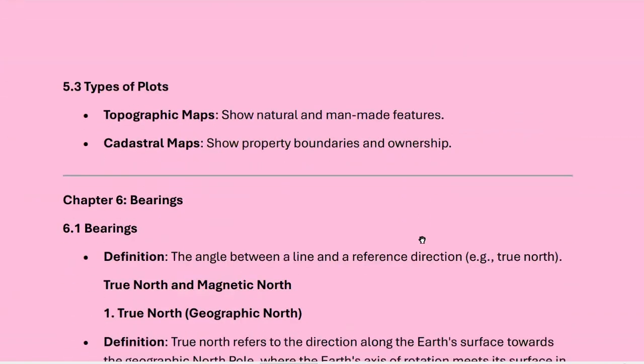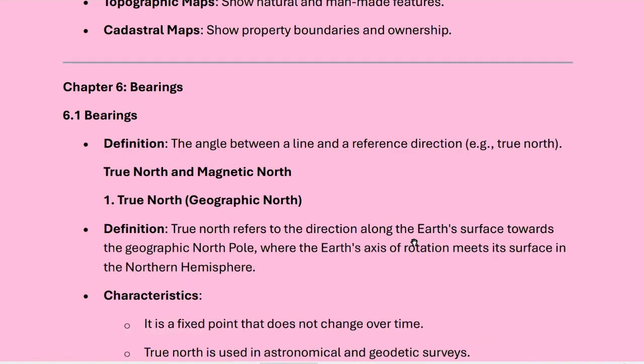Types of plots include topographic maps and cadastral maps. Topographic maps show natural and man-made features, while cadastral maps show property boundaries and ownership. The next term is bearing — the angle between a line and a reference direction, such as true north or magnetic north.